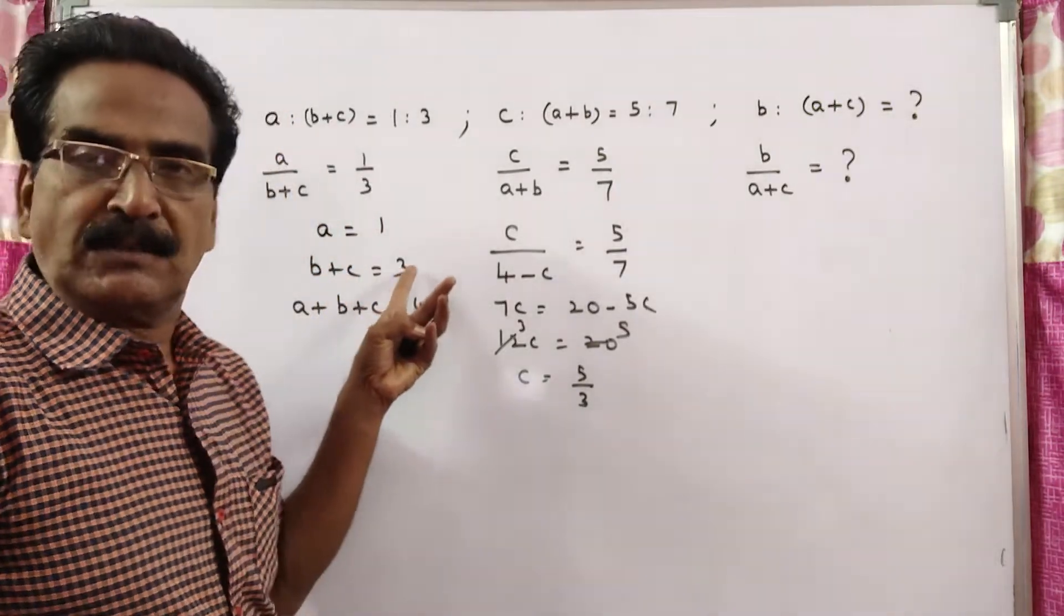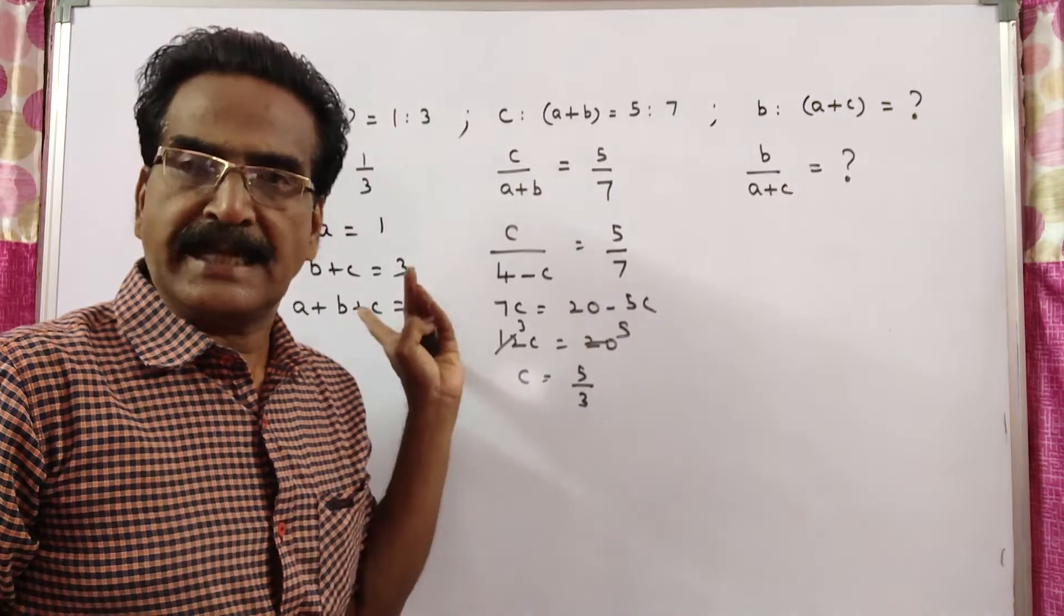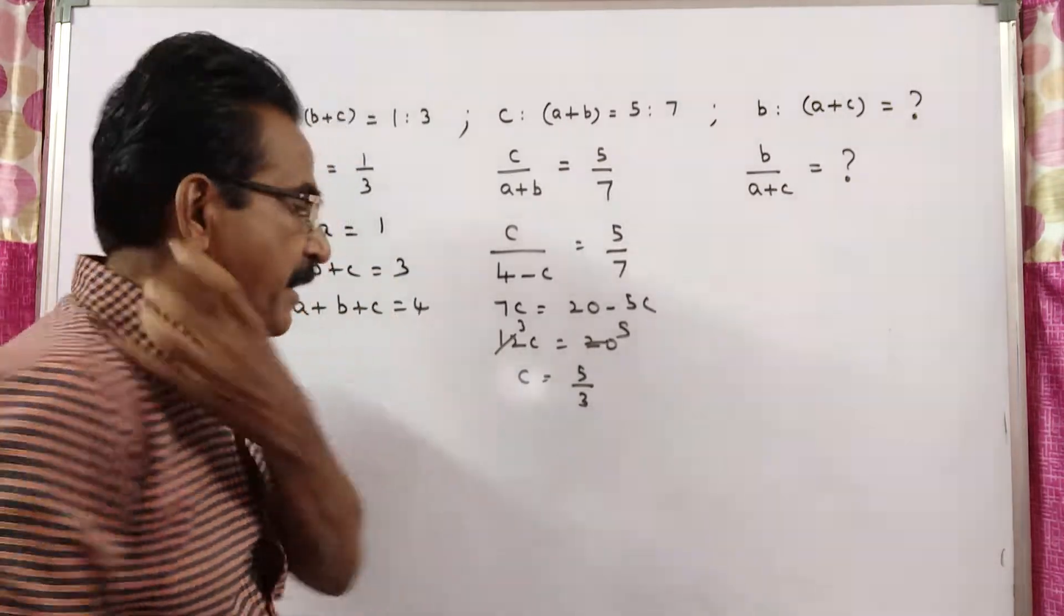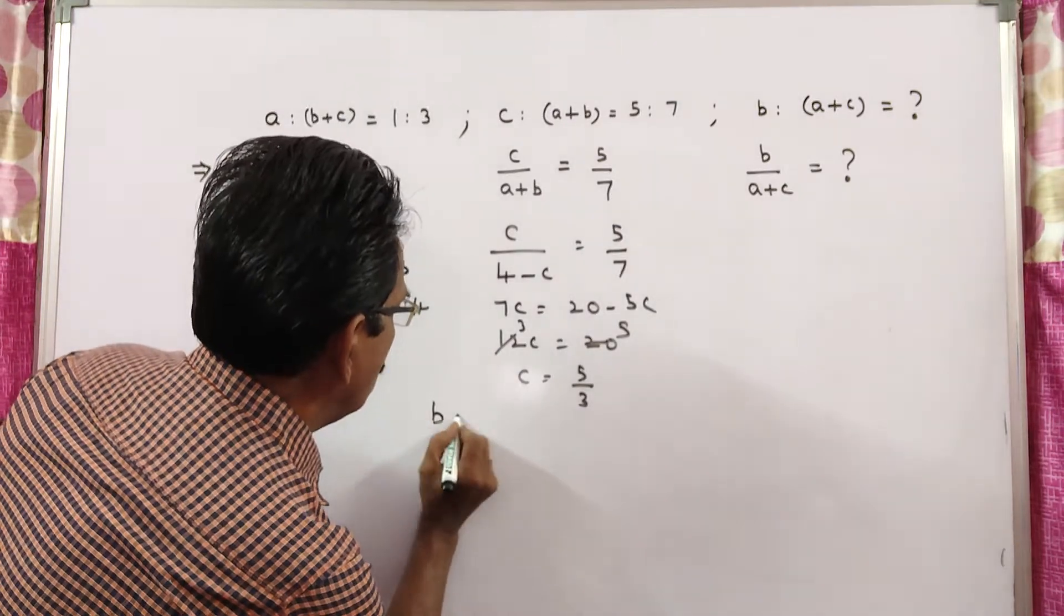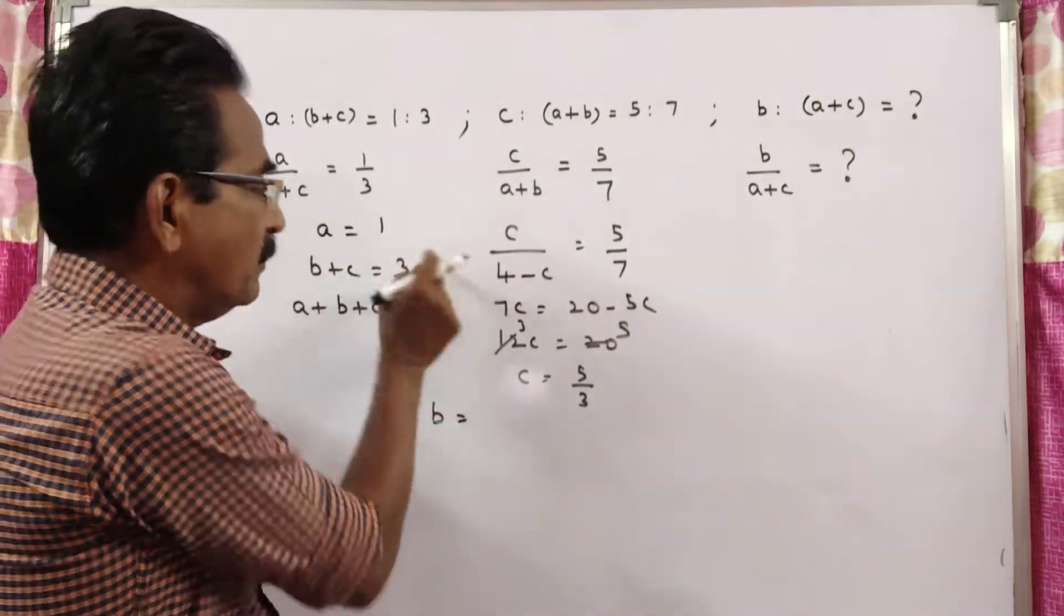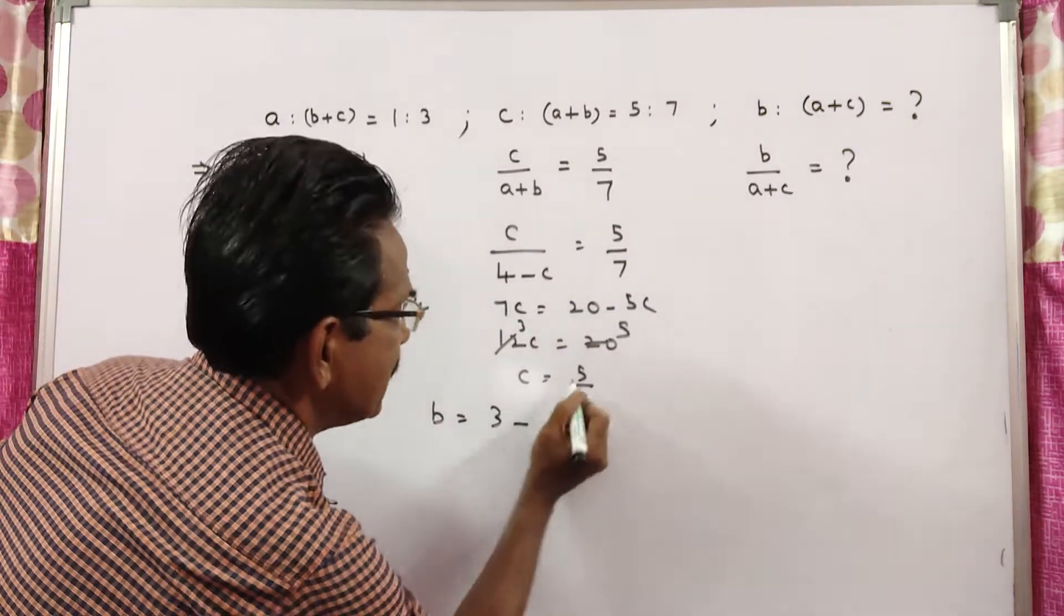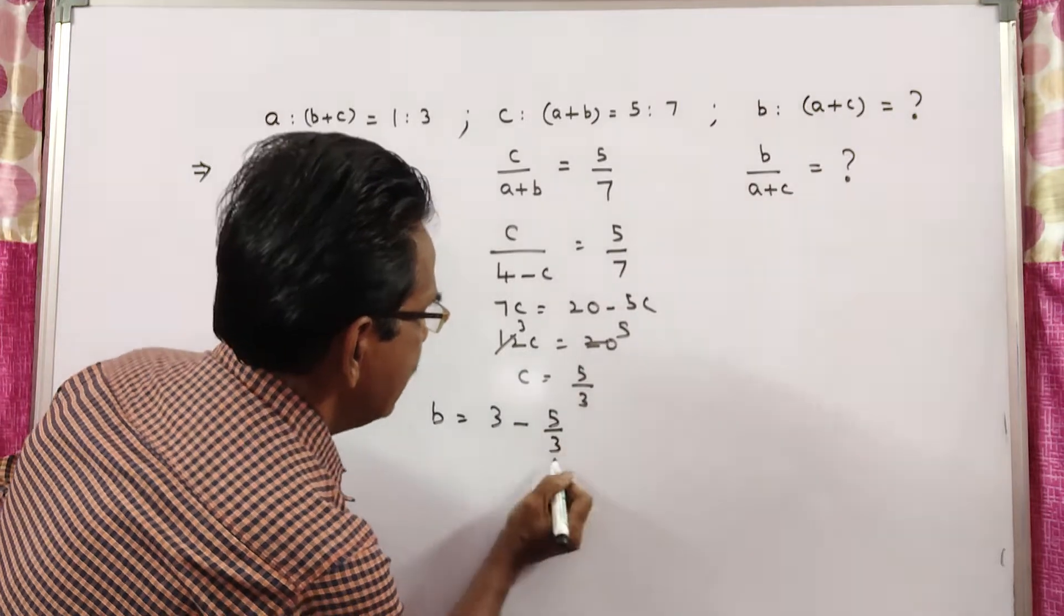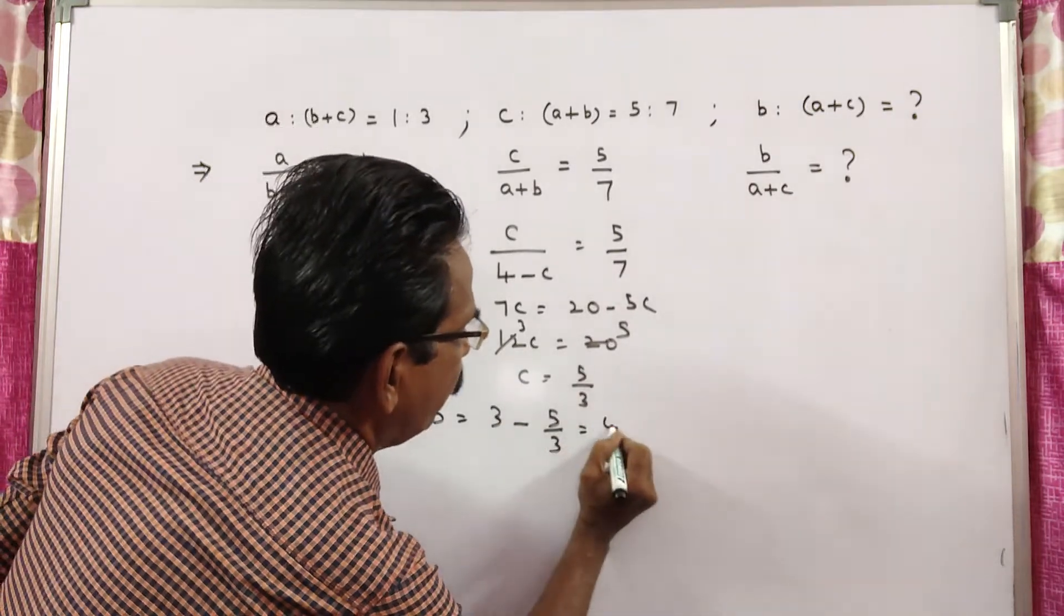Now, b plus c is equal to 3. From this, we can find b. b is equal to 3 minus c, 3 minus 5 by 3, 3 is 9 minus 5, 4 by 3.